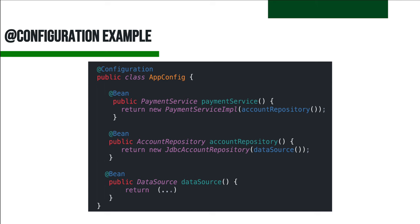Field injection allows direct injection into field declarations without constructor or method delegation. However, this type of injection is discouraged because it makes testing components in isolation more complex — it should only be used in test classes. For example, DefaultPaymentService is annotated with @Service, and the AccountRepository field is annotated with @Autowired for field injection.